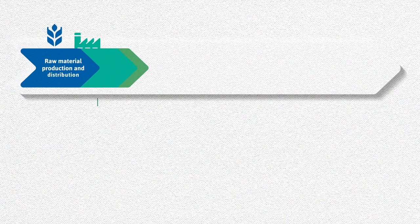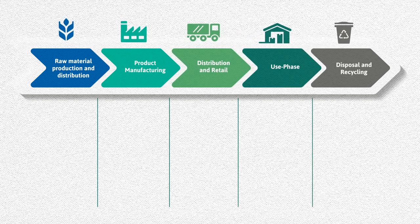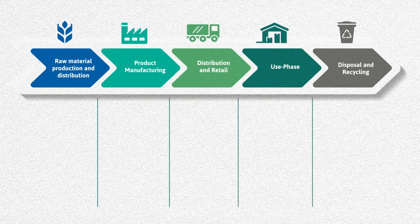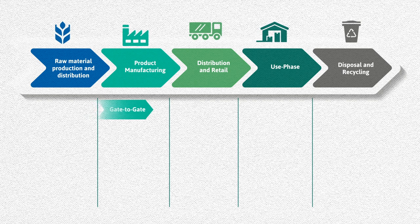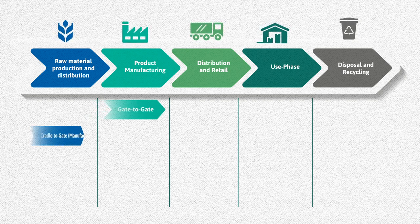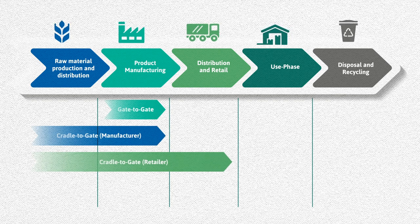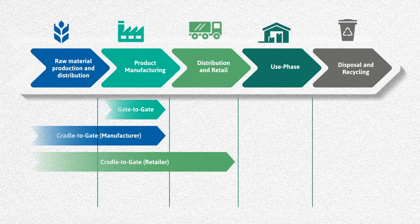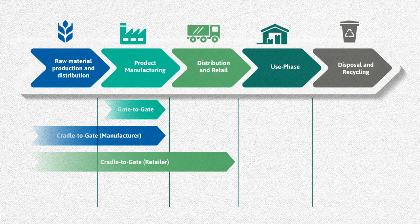A product life cycle comprises the stages that a product goes through, and it can be assessed through different perspectives. In a gate-to-gate assessment, only product manufacturing is accounted. Cradle-to-gate accounts impacts from raw materials through production or distribution, or even accounting from raw materials to the end of life, known as the cradle-to-grave approach.